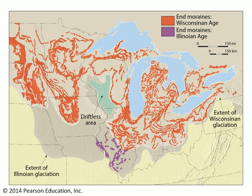Another feature that we discussed were end moraines. Here's a look at the American Midwest. There are two generations of end moraines depicted on this map. An earlier generation in purple, and then that's mostly overprinted by a younger generation, which is shown here in red. Notice that the younger generation tends to parallel the shapes of the Great Lakes. So the shorelines of the Great Lakes are matched by end moraines that are recessional end moraines.